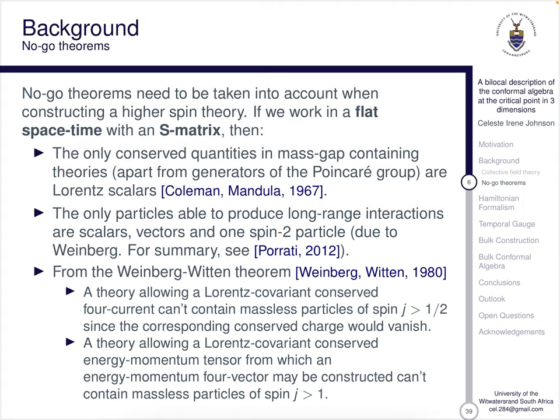From the Weinberg-Witten theorem, a theory allowing a Lorentz covariant conserved four-current can't contain massless particles of spin j bigger than a half, and a theory allowing a Lorentz covariant conserved energy-momentum tensor can't contain massless particles of spin j bigger than one. So if we work in flat spacetime we've got a problem with these no-go theorems. The way to circumvent it is to work on a curved spacetime, and that's where the AdS idea comes in quite handy.